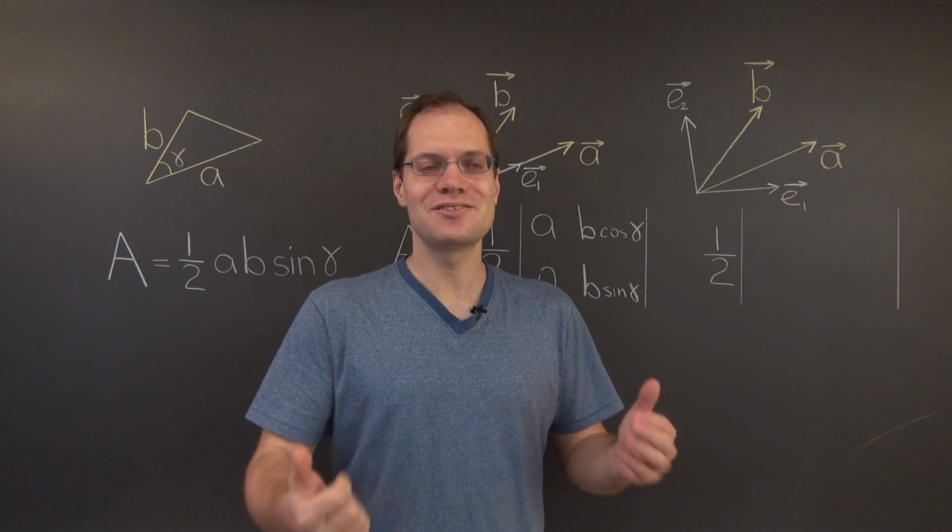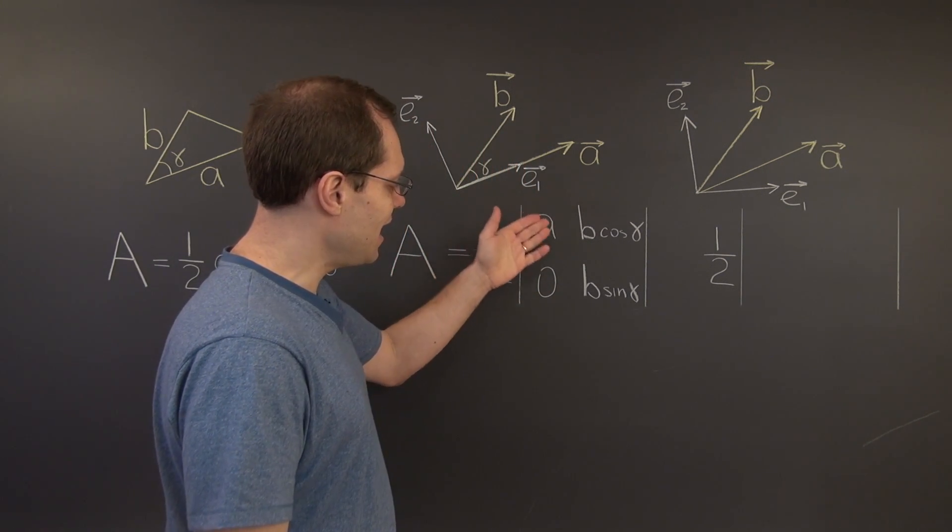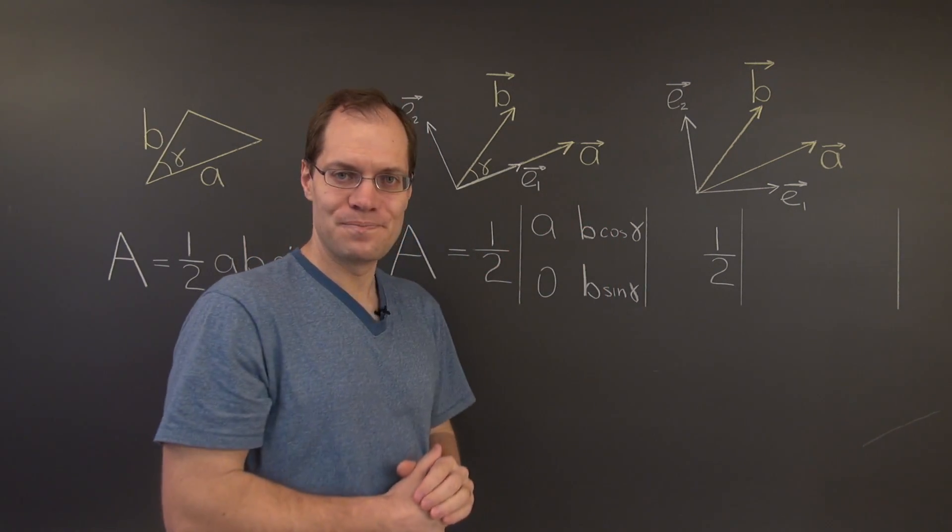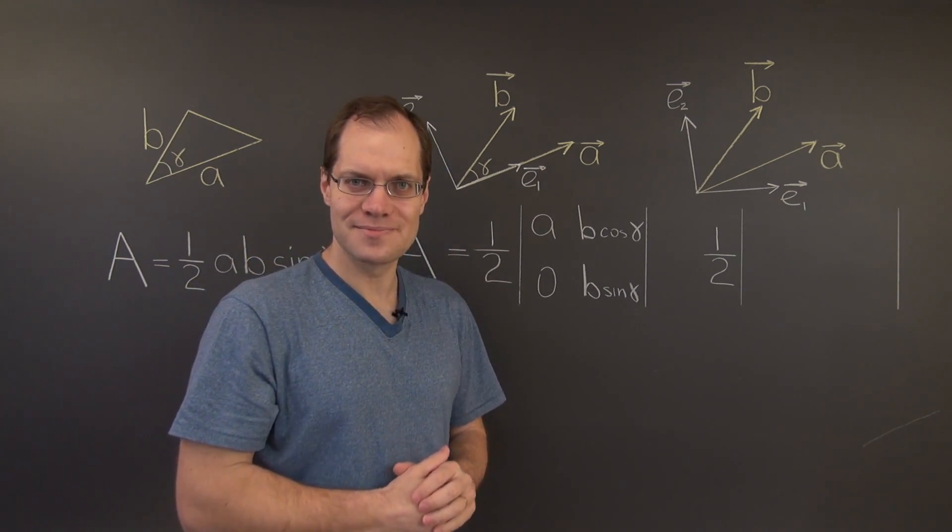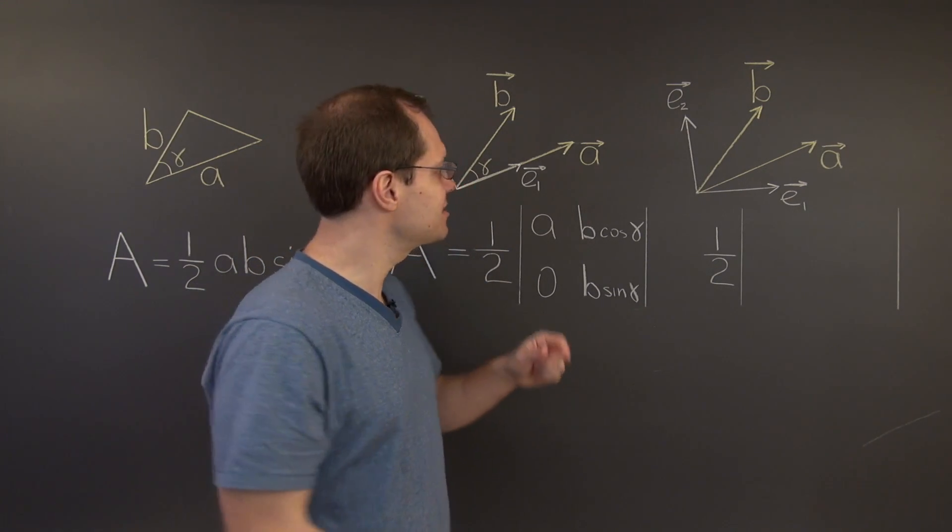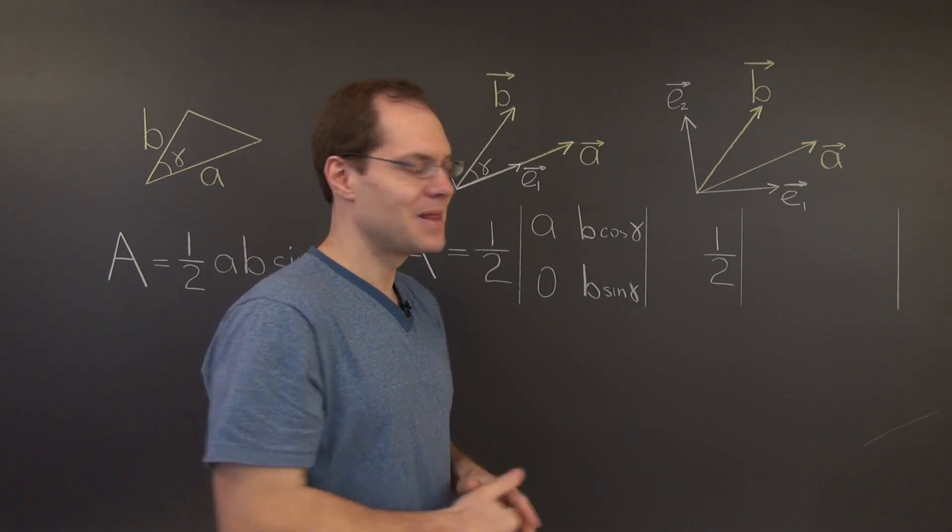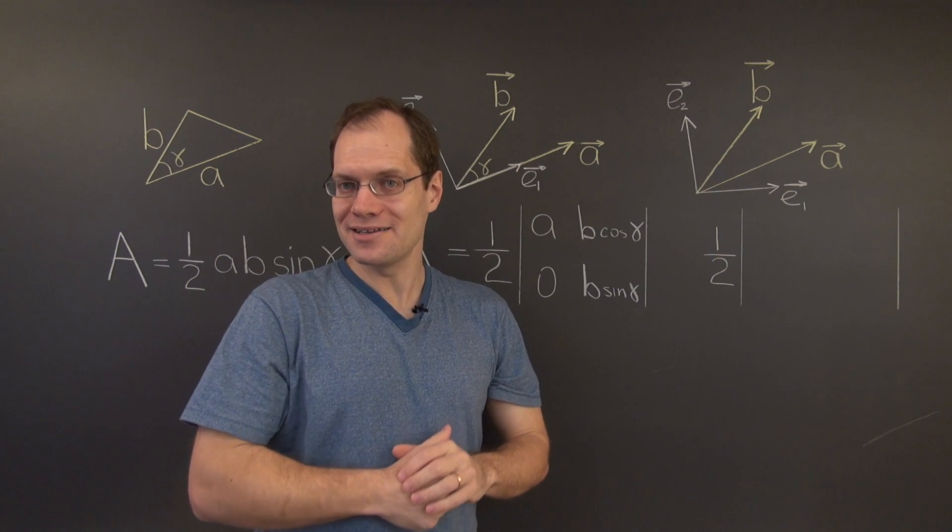All right, and now all that's left is to evaluate this determinant. And of course, it is one half A B sine gamma minus zero. And I forgot to mention that the one half is in front of the determinant.